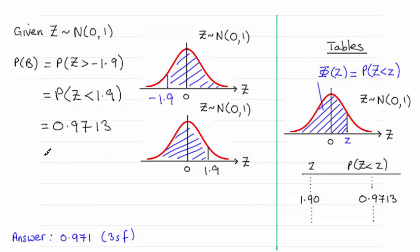And if you round that to three significant figures, that's 0.971.